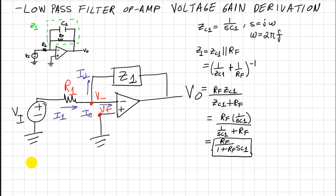From my previous videos for the inverting amplifier, we know that I1 is equal to I2 because Iin is equal to zero. So I1 is VI over R1, and I2 is negative VO over Z1.